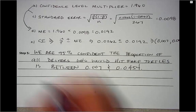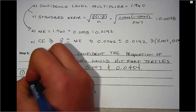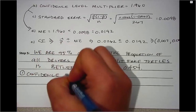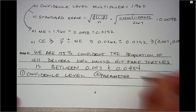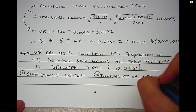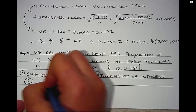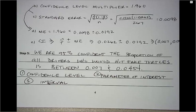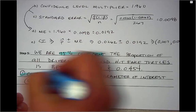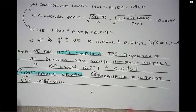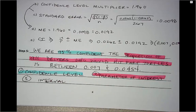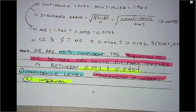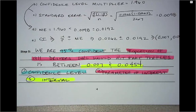There are three pieces of information needed when interpreting a confidence interval: you need the confidence level, you need your parameter of interest (which includes your population and the success), and you also need the interval itself. If you have those three things you should have a good interpretation of your confidence interval.